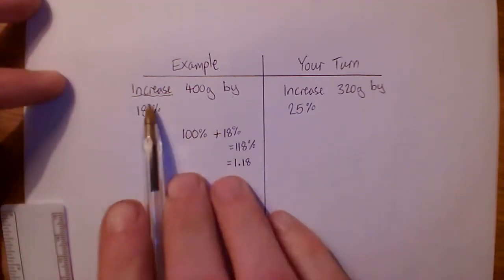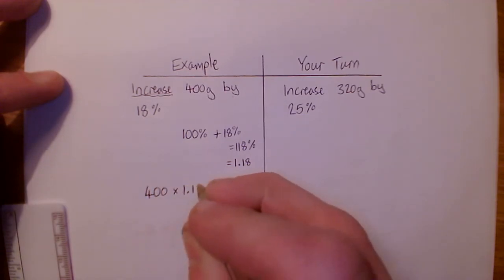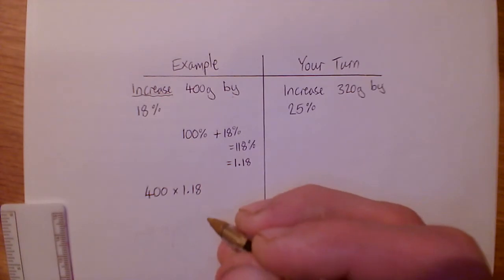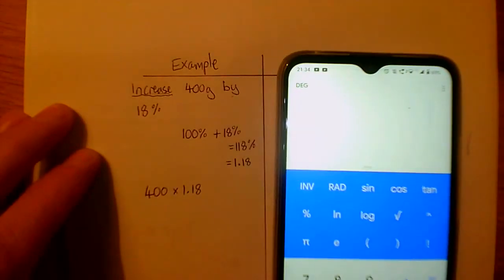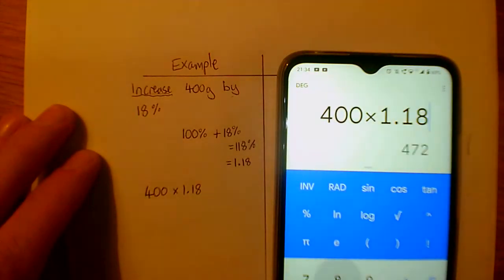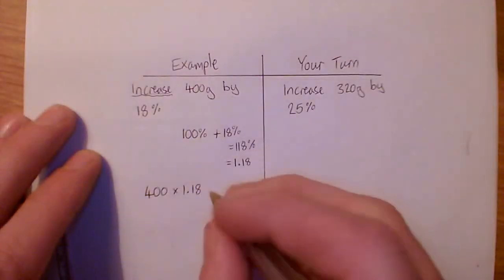Now we can do our increasing 400. So our new amount is 400 times 1.18. We can get our calculator out and do that. I'll bring mine on over here. So we've got 400 times 1.18, which is 472, and that is our answer.